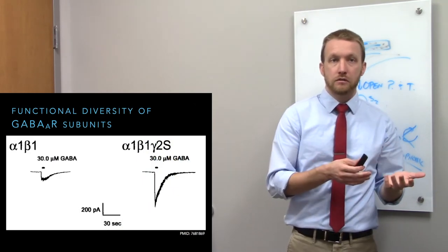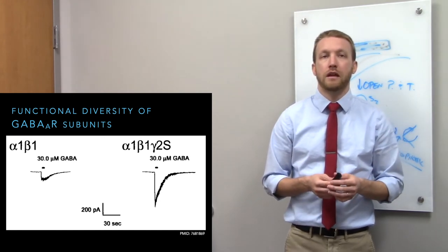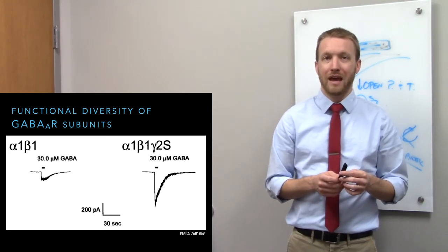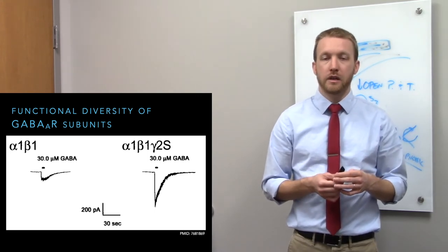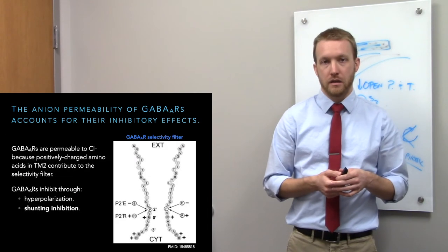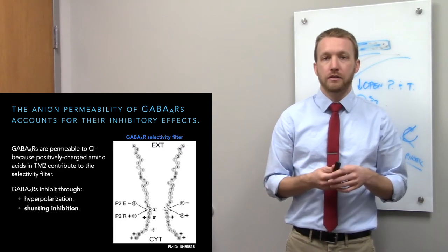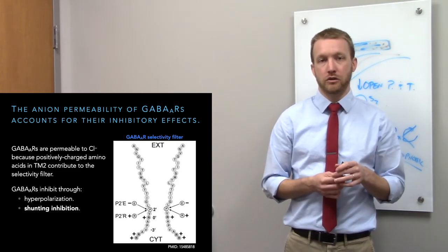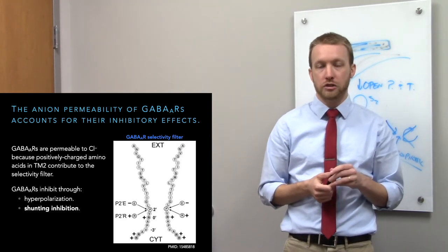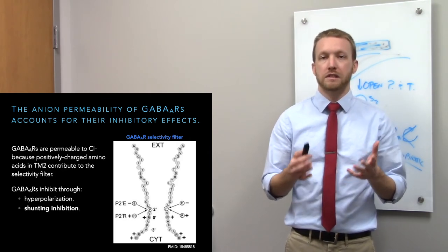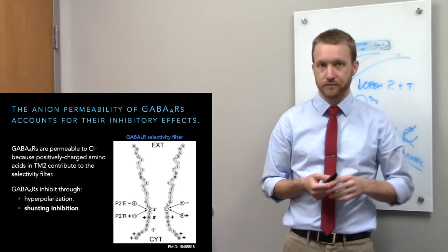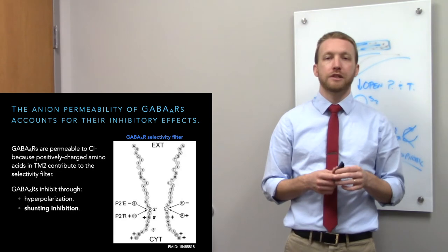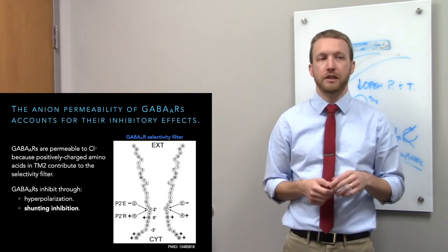An alpha-beta-only composition can produce a current upon GABA binding, but receptors that include gamma subunits show a stronger current at the same GABA dose, reflecting different kinetics and open probabilities based on subunit makeup. Regardless of composition, when GABA receptors open they create inhibitory currents because they are chloride channels — their selectivity filter is made of positively charged amino acids. The key mechanism of inhibition is shunting inhibition: resisting depolarization, not just hyperpolarization.